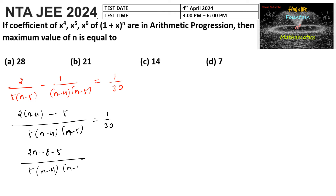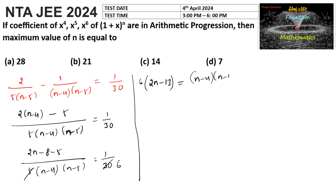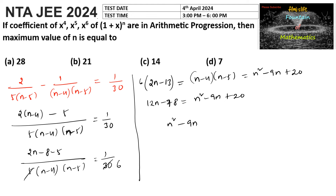Cross-multiplying and simplifying, we cancel the 5 and 6 from both sides to get 6·(2n−13) = (n−4)·(n−5), which expands and simplifies to n² − 21n + 98 = 0.